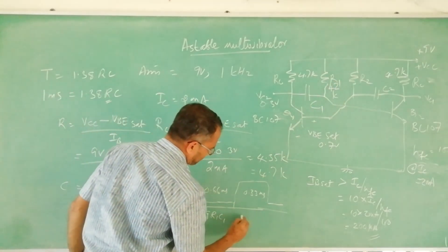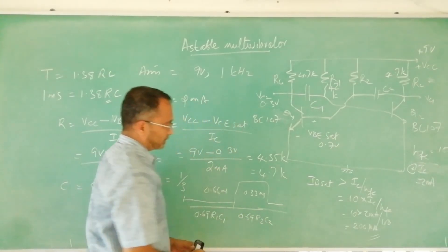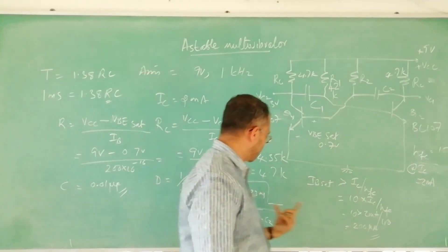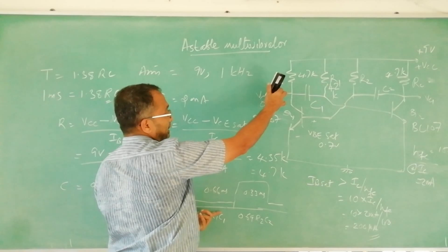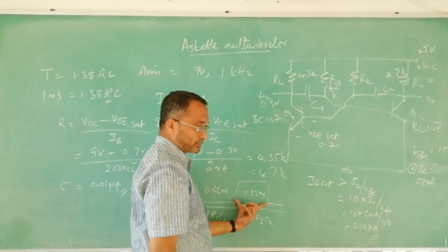And naturally this will be 0.69 R2 C2 because during that period that transistor will be on. This Q2, this is the output taken from. So Q1 is on for this period and Q1 is off for this period.